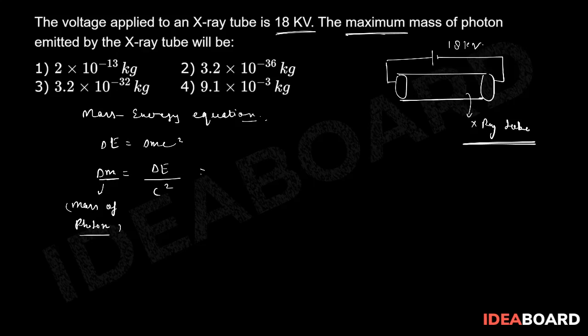Maximum mass means Δm_max will represent ΔE_max divided by c squared. How do we find ΔE_max? ΔE_max is simply e times V_max, which gives us the value in electron volts. Now I can substitute these values: Δm_max equals e times V_max divided by c squared.